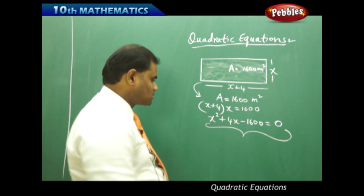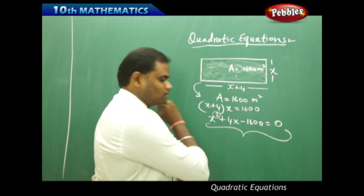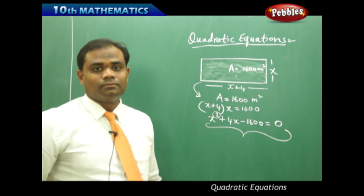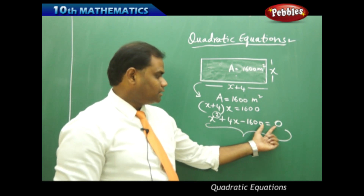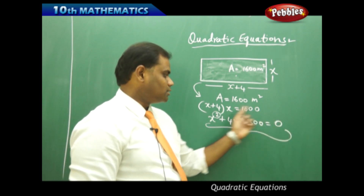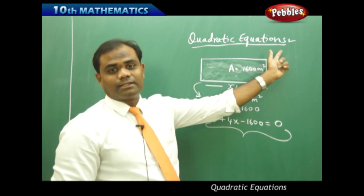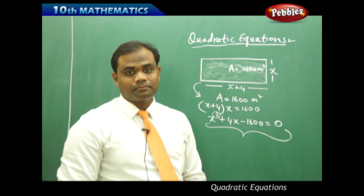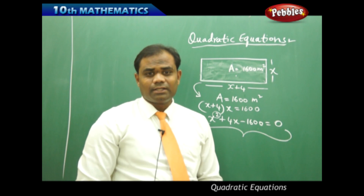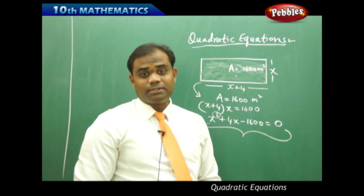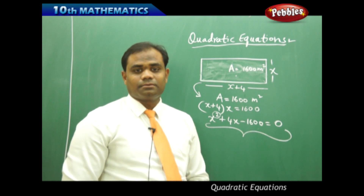It is called quadratic because the highest degree of the polynomial is 2. So a quadratic polynomial equated to zero is, on the whole, called a quadratic equation. We are going to study the different properties of quadratic equations in this session.